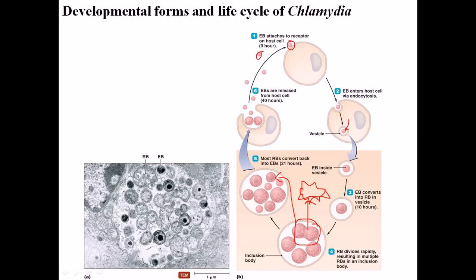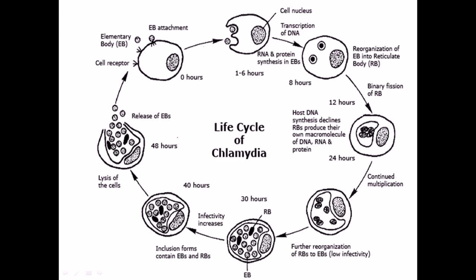In the electron micrograph of an infected host cell, we can find elementary bodies with dark dense cores in the middle, and reticulate bodies as larger granular structures. Reviewing the life cycle timing: infection occurs from zero to six hours; reticulate bodies form from elementary bodies around 24 hours post-infection; elementary bodies re-form around 40 hours; and at 48 hours, those elementary bodies burst out of the cell and are released.